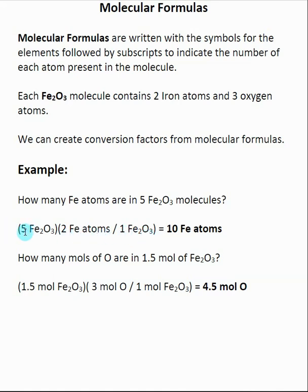So if we multiply through, if we have five Fe2O3 molecules and we multiply by this ratio, there's two for every one Fe2O3, we get that inside of our five Fe2O3 molecules, we have 10 Fe atoms.